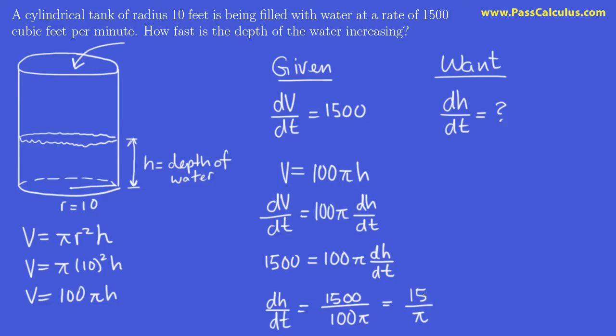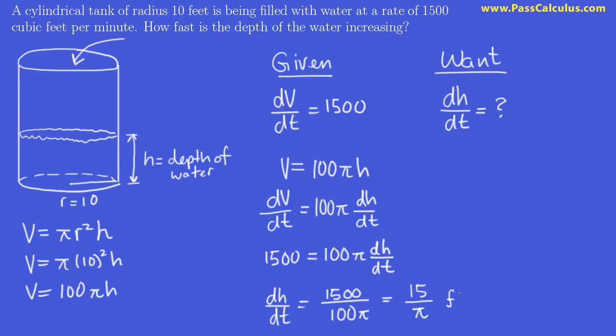What are the units? This is a change in height, so it's feet per unit of time, which in this case is minutes. So dh/dt = 15/π feet per minute is our exact answer. Converting to decimal, we get approximately 4.8 feet per minute.